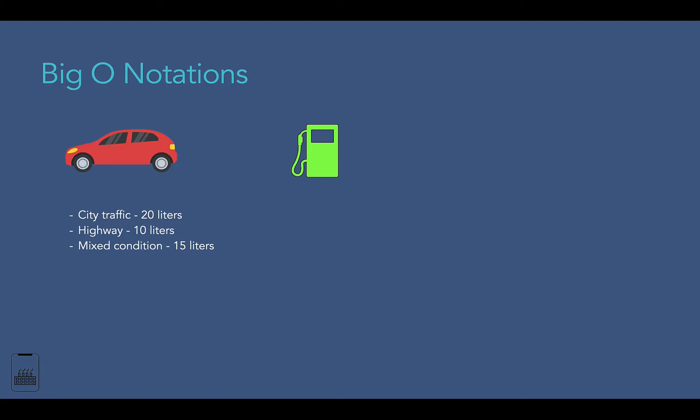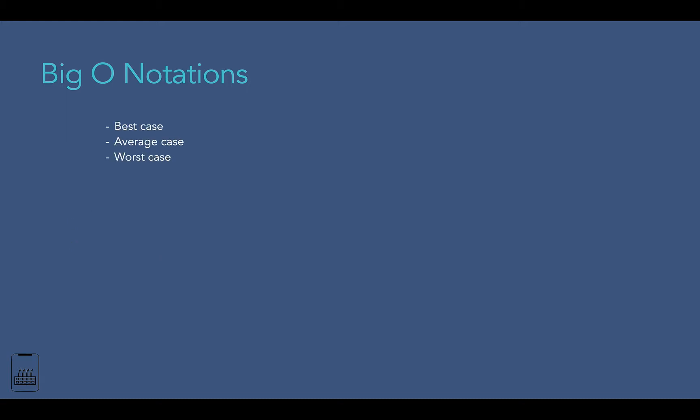The same car can perform differently based on the condition that we drive. Similarly, algorithms can perform differently based on the condition that is given. We might have three scenarios when measuring the performance of any given algorithm. These are the best case, worst case, and average case.